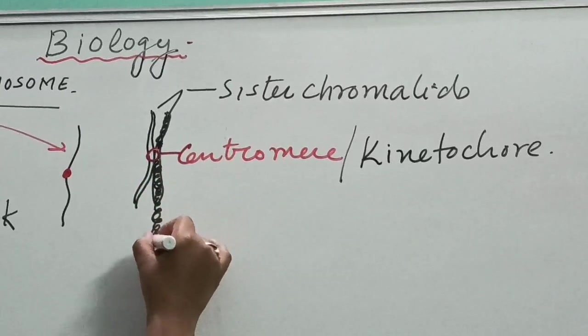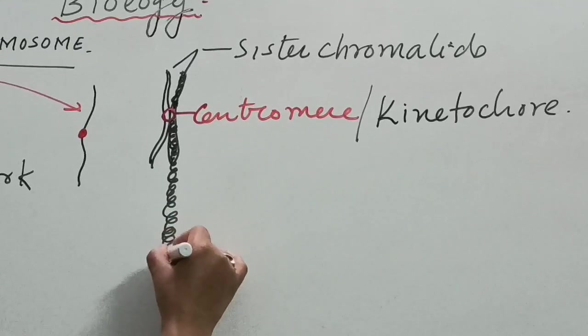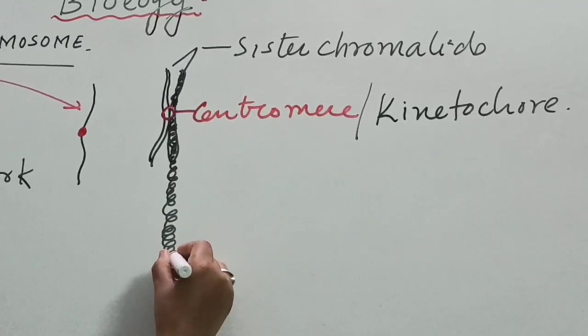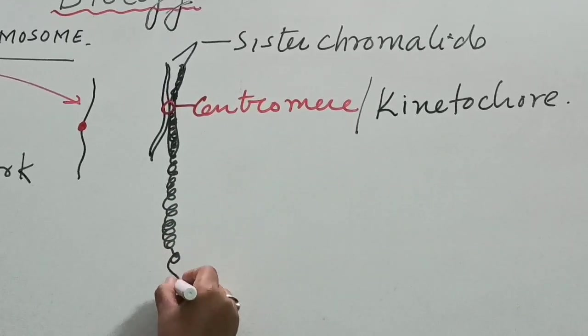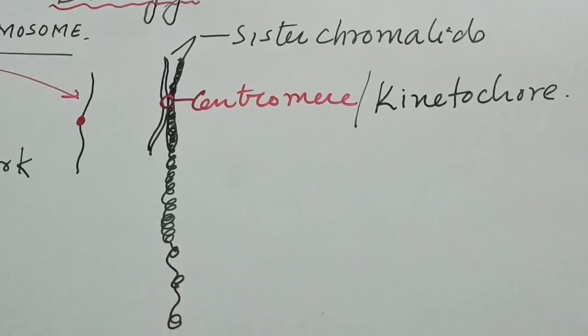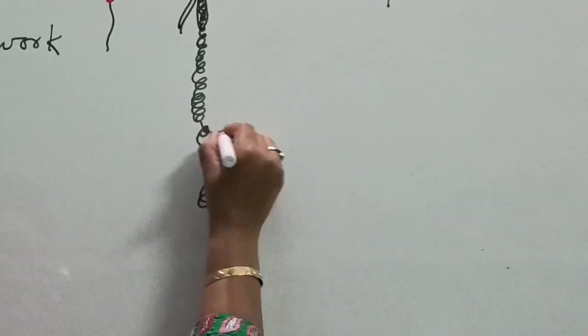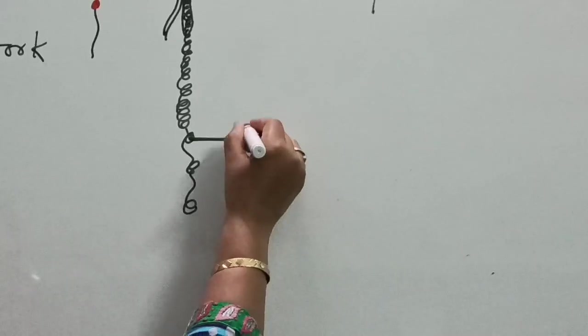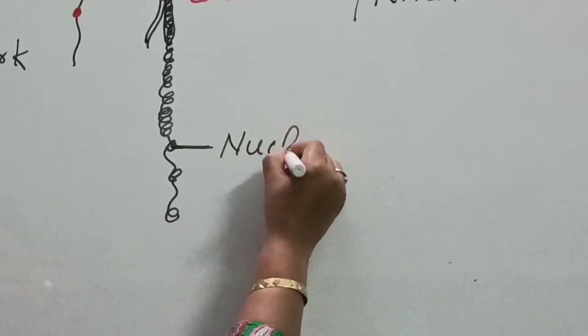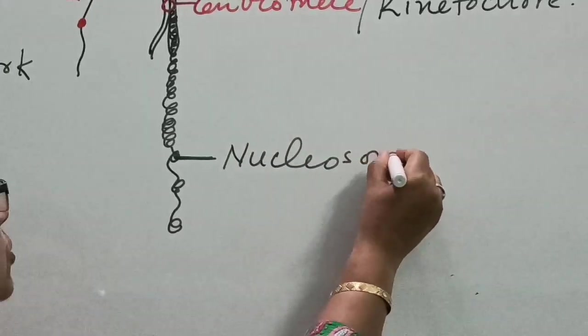When we open the structure, so this highly coiled structure shows some beaded appearance like this. This beaded appearance, this bead is termed as nucleosome.